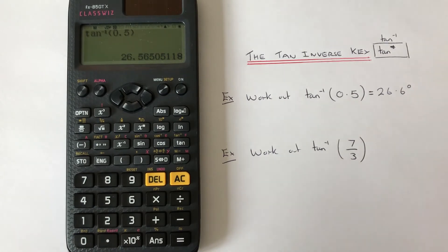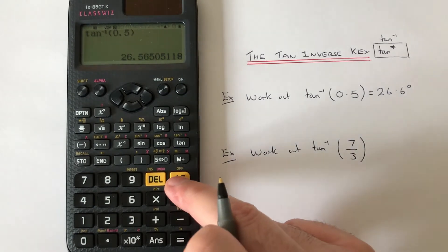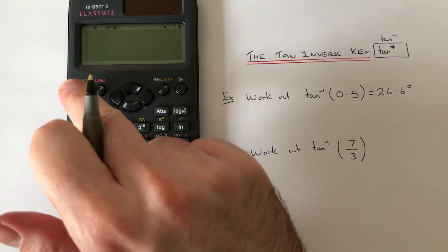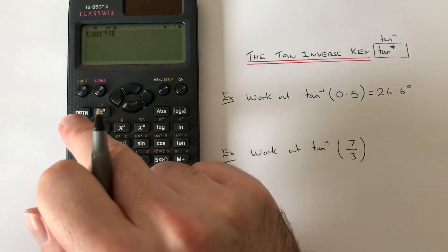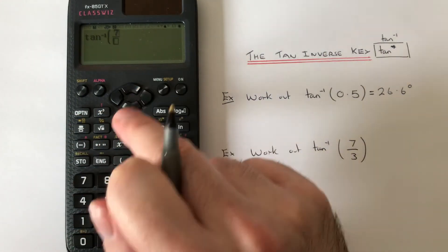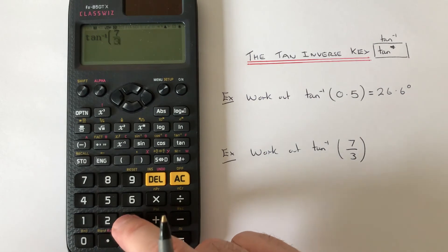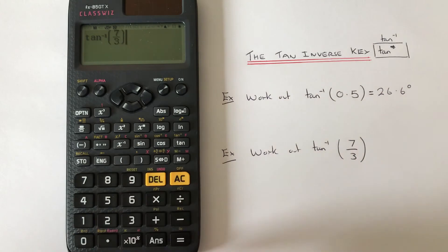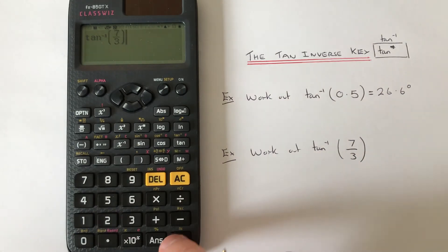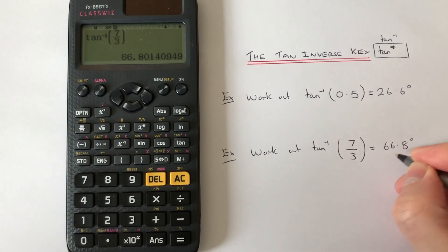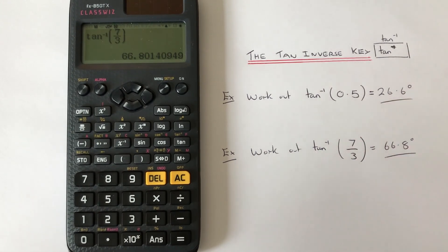This time we've got to work out tan inverse of seven thirds. So we go Shift, tan, fraction key, seven, right key, three, and then we need to close the bracket at the end. Press the right key and the right bracket, hit equals, and we get 66.8 degrees. Thanks for watching guys, see you next time.